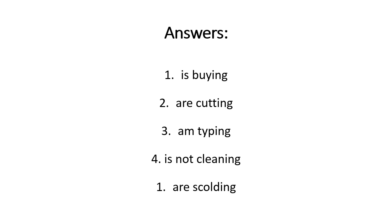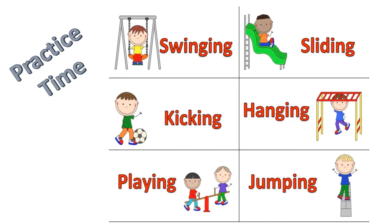You can do more practice at home and make many sentences using present continuous tense. For practice, use these present participle verbs related to fun activities: swinging, sliding, kicking, hanging, laying, jumping. First make positive sentences, then change them into negative form by adding not after the helping verb and before the present participle. In this way, you can make as many sentences as you can and learn present continuous tense very well.